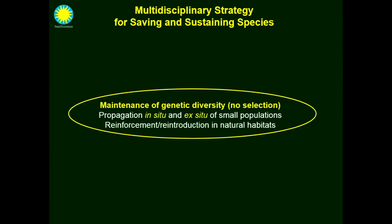The core of animal conservation for wild species is really to maintain what we call genetic diversity. We try to avoid selection in the animals we manage, and we try to do some propagation — what we call in situ, meaning in the wild, or ex situ, in research centers, ranches, or zoos. We usually have to deal with small populations, and then the objective is to reintroduce them in the wild when they've been extinct in their natural habitat, or to reinforce some existing populations.